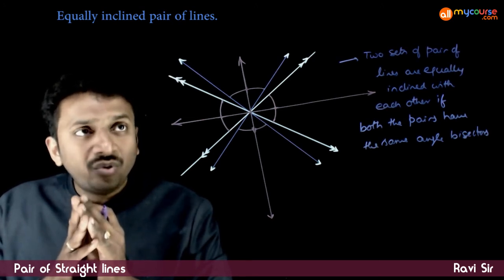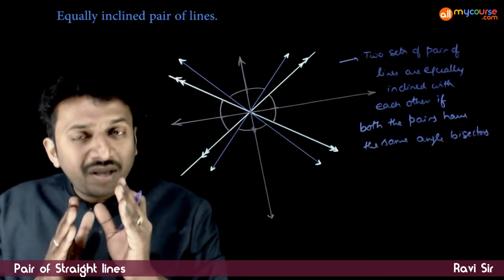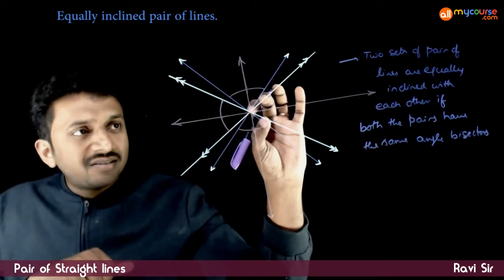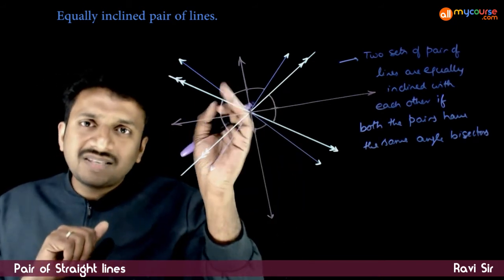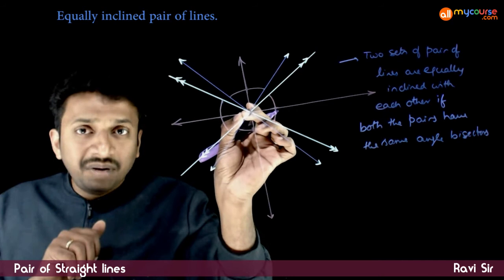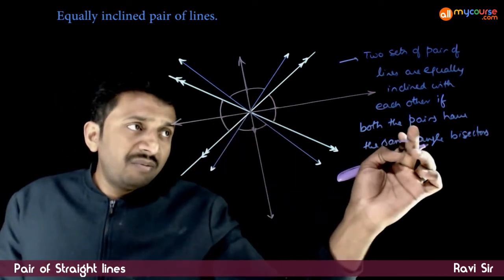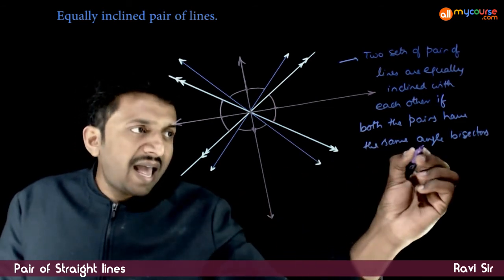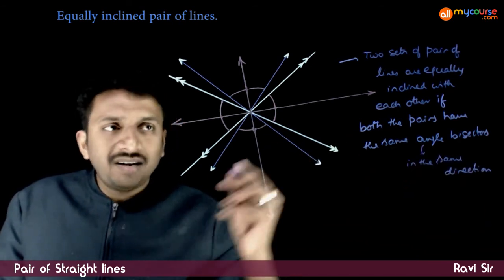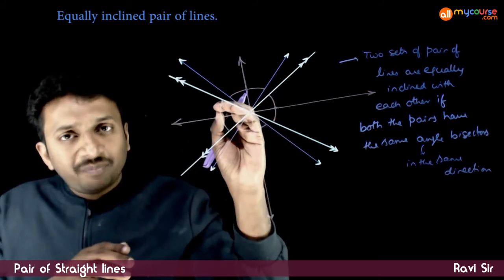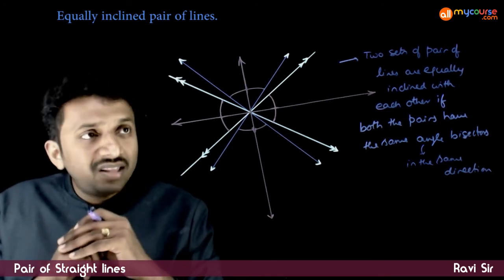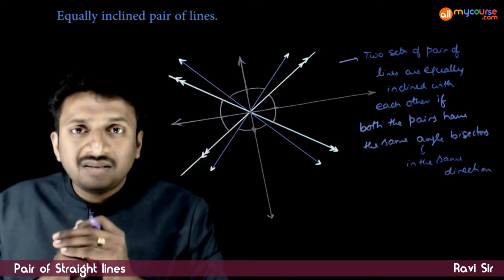So if you are asked to prove that the pair of lines are equally inclined to each other, you find the angle bisectors of the first pair of lines and the angle bisectors of the second pair of lines. If both of them are in the same direction — they don't need to be meeting at the same point — that is, angle bisectors in the same direction, and if the quadratic part of both the equations is the same, then we say that the lines are equally inclined with each other.